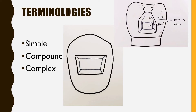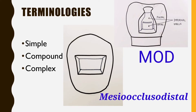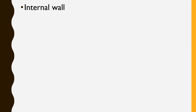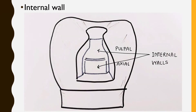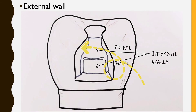These are the tooth preparation walls. An internal wall is one that does not extend to the external tooth surface. The pulpal floor shown here is an internal wall and is perpendicular to the long axis of the tooth. The axial wall is also an internal wall — it is parallel to the long axis of the tooth.